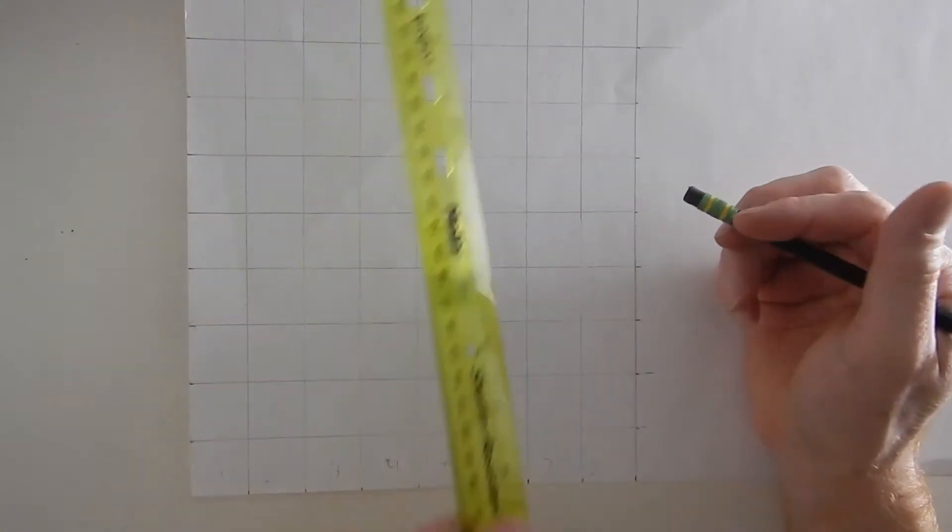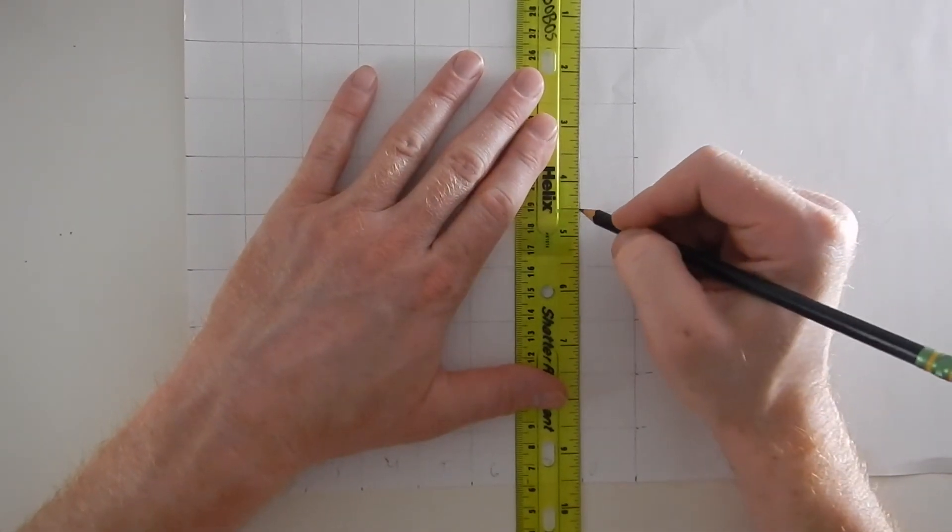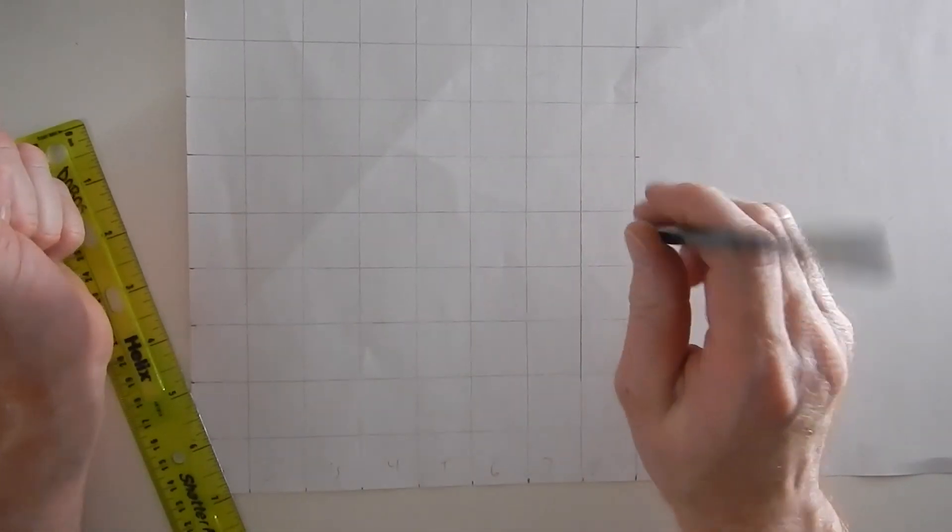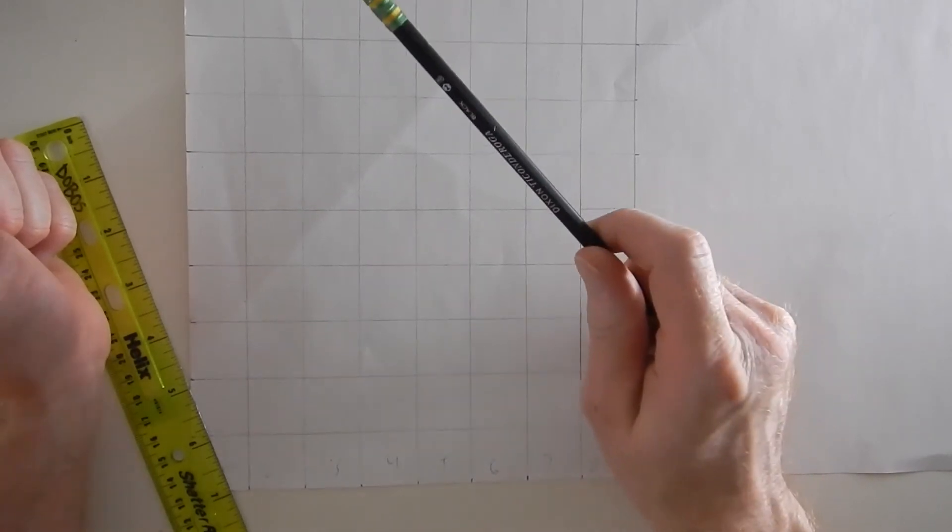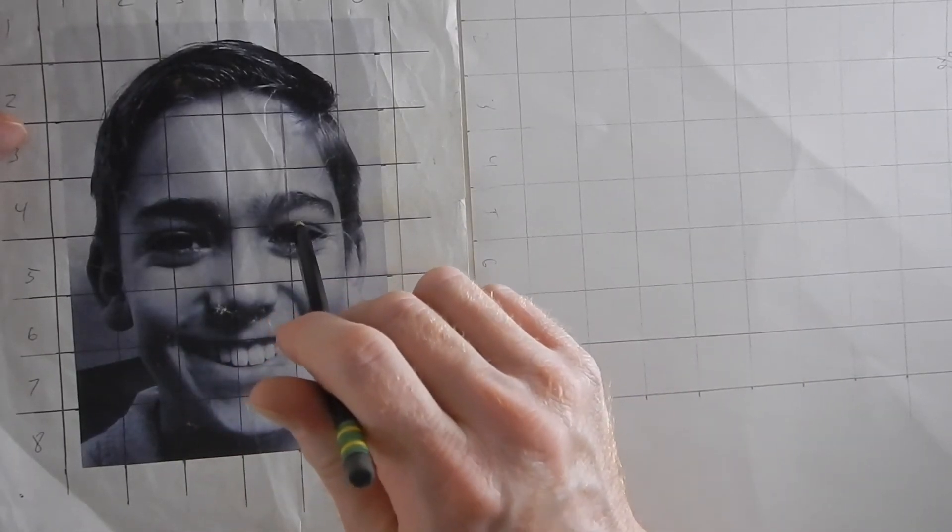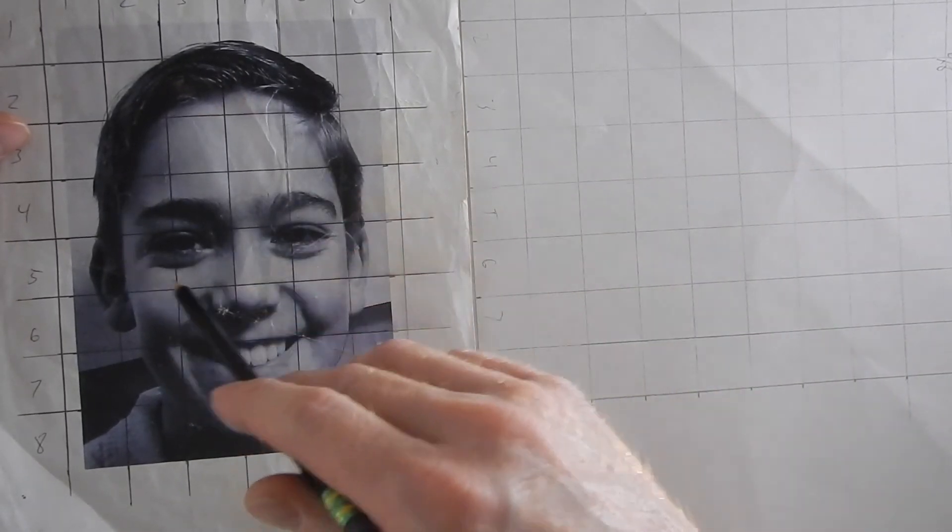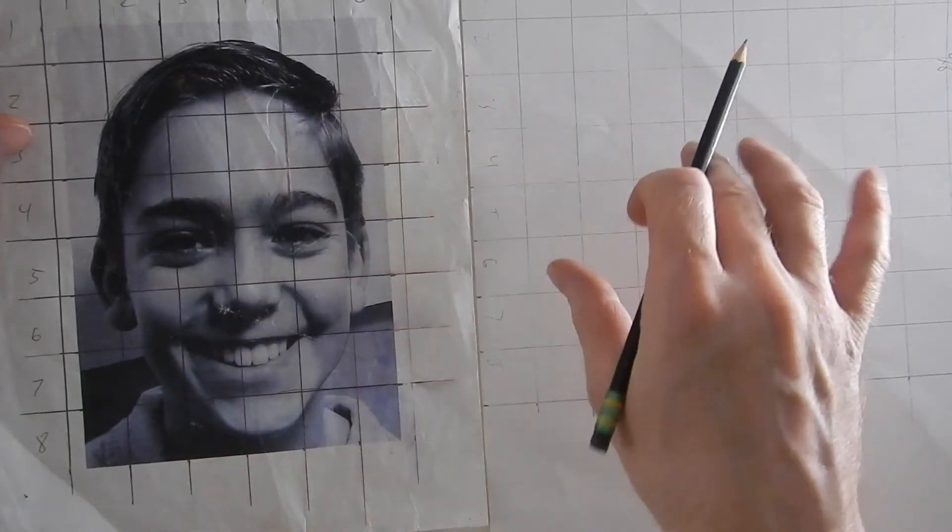Yes, grid drawing is one of the few times where I'm going to tell you use your eraser and only so that you can make sure your grid is as accurate as you can make it. The more accurate your gridding is, the more accurate and realistic your drawing will be. I have the exact number of squares here are going to be the same number of squares here.